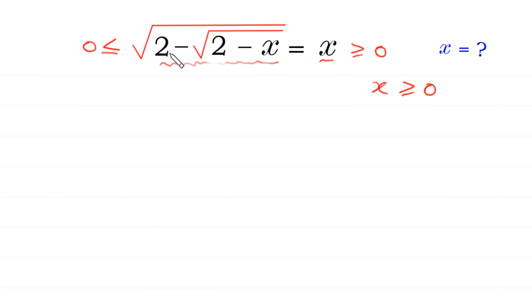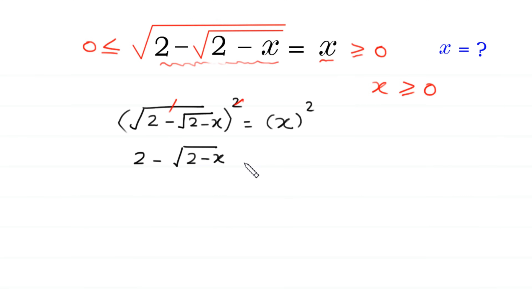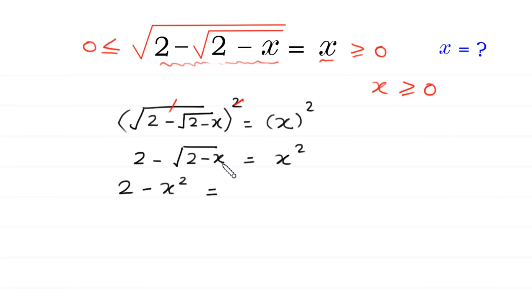Let us start by squaring both sides. Square root of 2 minus square root of 2 minus x is equal to x. We take the square of both sides. The square cancels with the square root, and on the left side we have 2 minus square root of 2 minus x is equal to x squared. Now we move x squared to the left and the negative square root of 2 minus x to the right, so 2 minus x squared equals positive square root of 2 minus x.